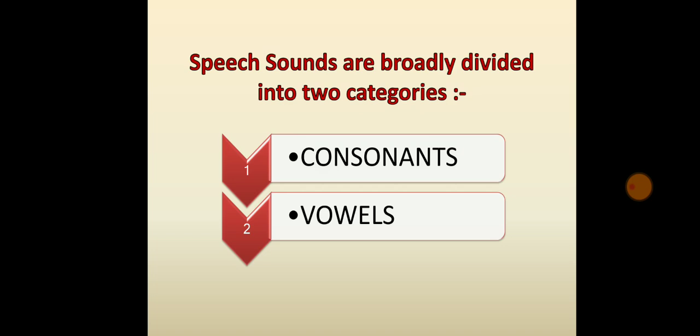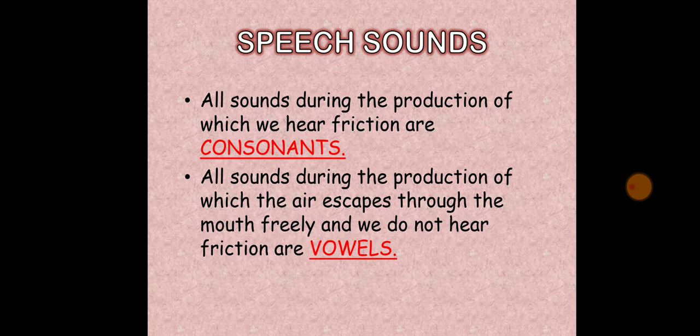The speech sounds are broadly divided into two categories: consonants and vowels. All the sounds during the production of which we hear friction are known as consonant sounds. All sounds during the production of which the air escapes through the mouth freely and we do not hear friction are vowel sounds.